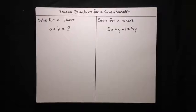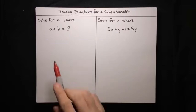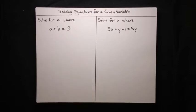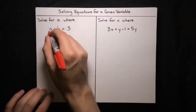In this video, I'm going to show you how to solve equations for a given variable. Here's our first problem: we want to solve for a, where a plus b equals 3. So that means our goal here is to isolate a.